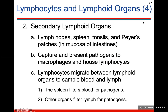The secondary lymphoid organs are your lymph nodes, spleen, tonsils, and Peyer's patches. What these will do is capture and present pathogens to macrophages, house your lymphocytes, and then lymphocytes will migrate between the lymphoid organs to sample blood and lymph.